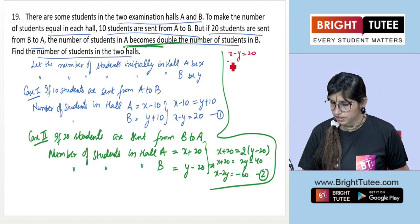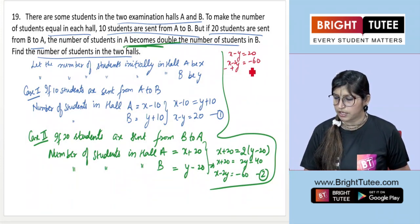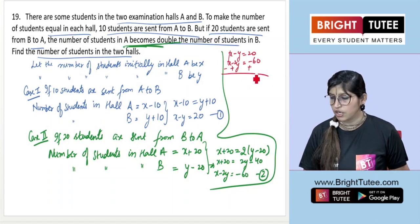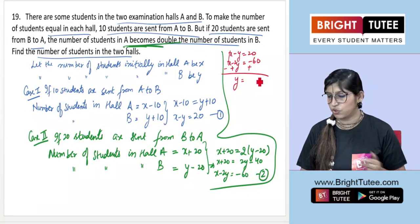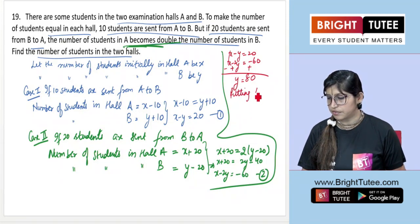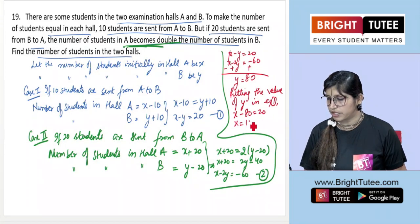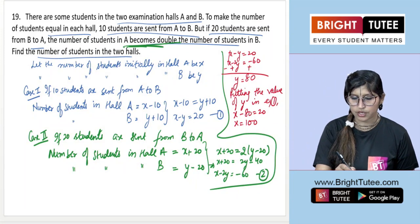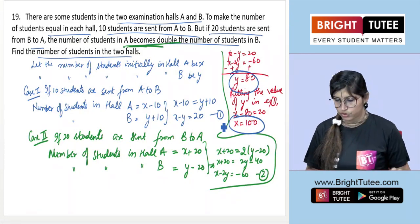Now solving the two equations: equation 1 is x minus y equals 20, and equation 2 is x minus 2y equals minus 60. Subtracting equation 2 from equation 1, we cancel x and get minus y plus 2y equals 20 plus 60, so y equals 80. Substituting y equals 80 into equation 1: x minus 80 equals 20, so x equals 100.